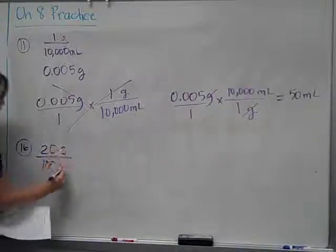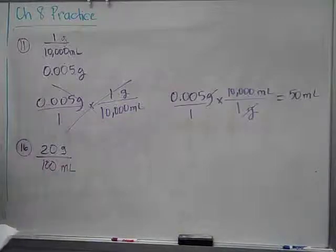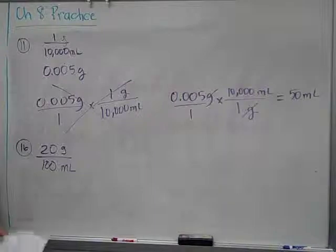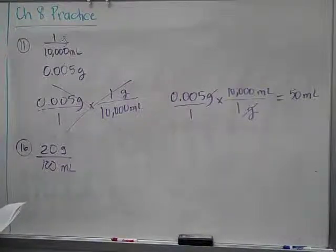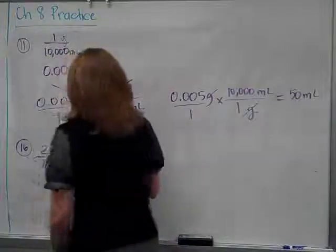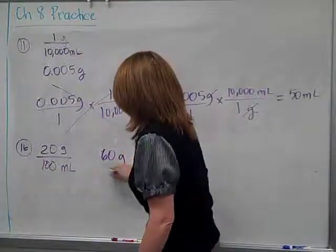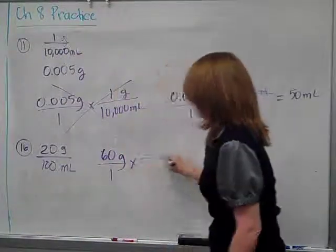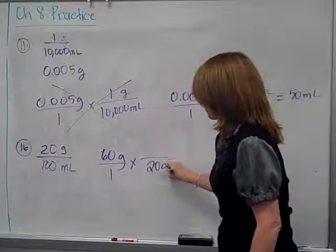Because of the grams, that would be grams over milliliters. But when I try to do my calculation, I'll start with the 60 grams. But the only way it's going to cancel with that strength is if I take that percent and reverse it or flip it.